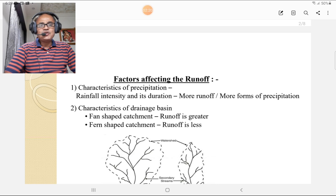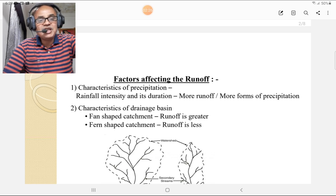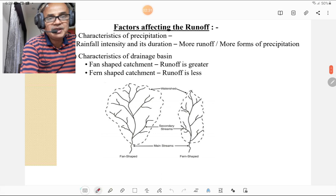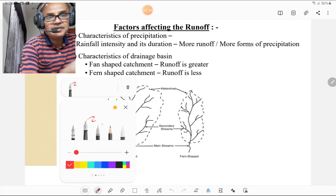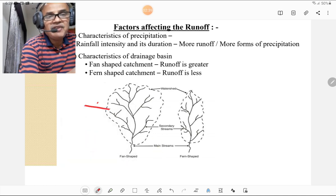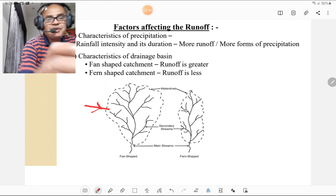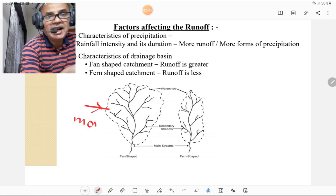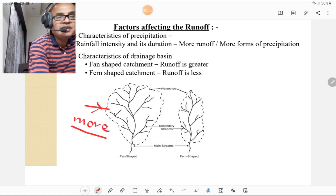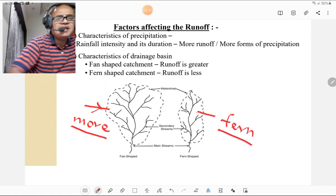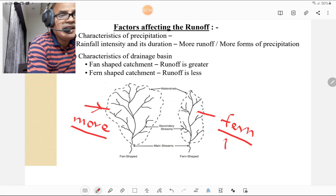Second, characteristics of the drainage basin. For fern shaped catchment, runoff is more or greater. But for fan shaped catchment, runoff is less. Please look at these figures. The first is the fern shaped catchment, more in area, and it will get more runoff. The fan shaped catchment, that is second type of catchment, having less catchment area and having less runoff.